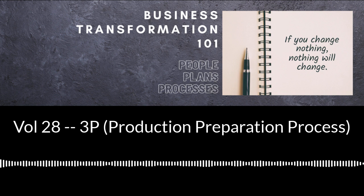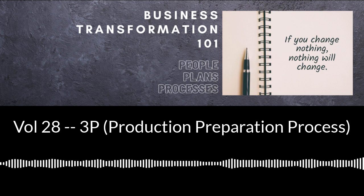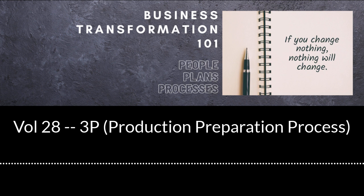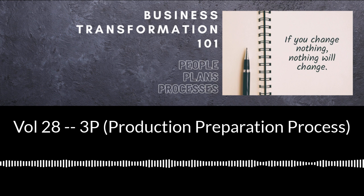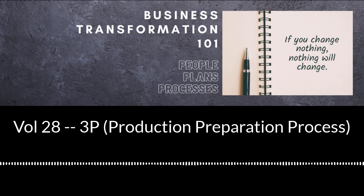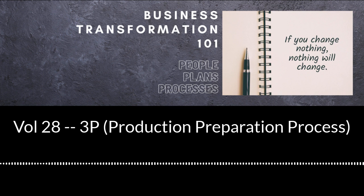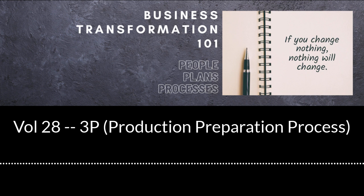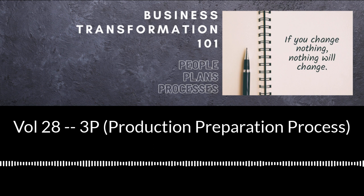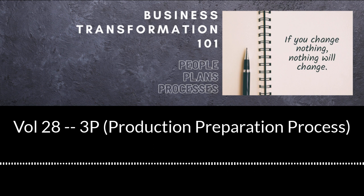The 3P process should be used when some of the following situations exist: a new product is being developed; an existing product is undergoing a significant redesign; there is a significant uptick in demand; or a new plant is being built. Also, if there are significant barriers in the existing product process that are limiting the company's ability to meet customer demand effectively and profitably. And finally, when there is a need to create additional space in a facility.